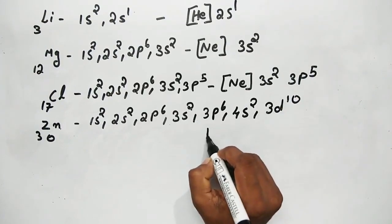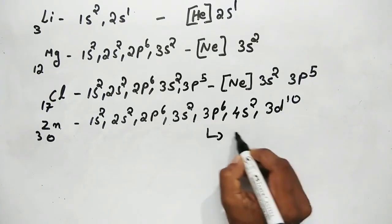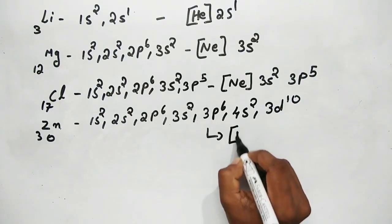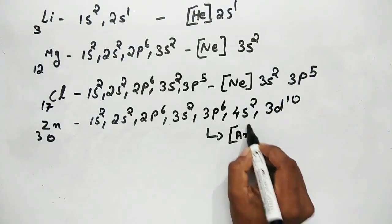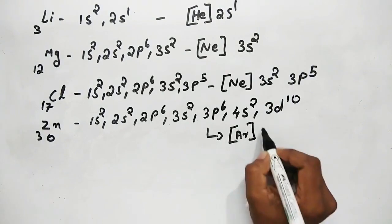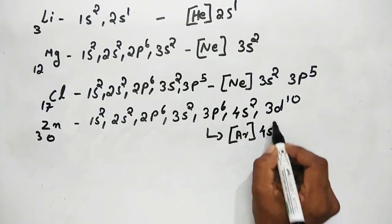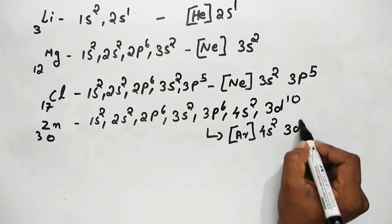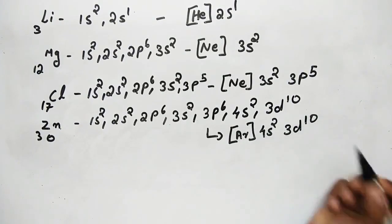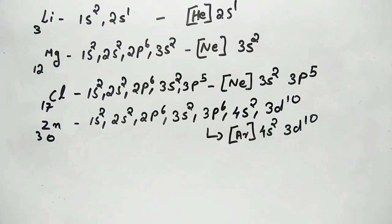For zinc, atomic number 30, the electronic configuration goes up to 4s², 3d¹⁰. The short-form electronic configuration for zinc is also provided here.